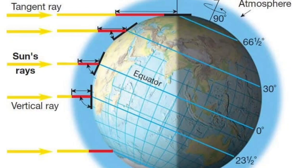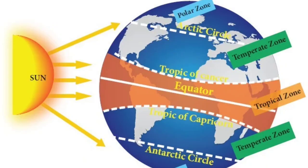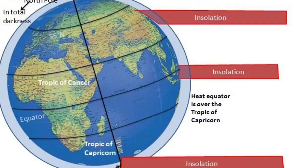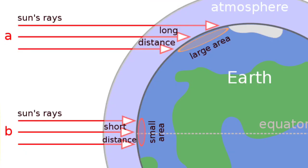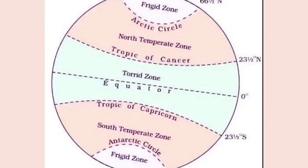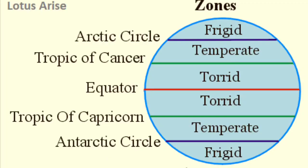Latitude at which a place is situated is an important factor controlling the distribution of temperature. It determines the amount of insolation that is received at a particular place. The place situated at lower latitude near the equator receives higher temperature as compared to the regions close to the poles. It is because of this that the tropical region is the hottest region of the earth, and the temperature decreases in the temperate and the polar region. Insolation varies according to latitude and the temperature also varies accordingly.